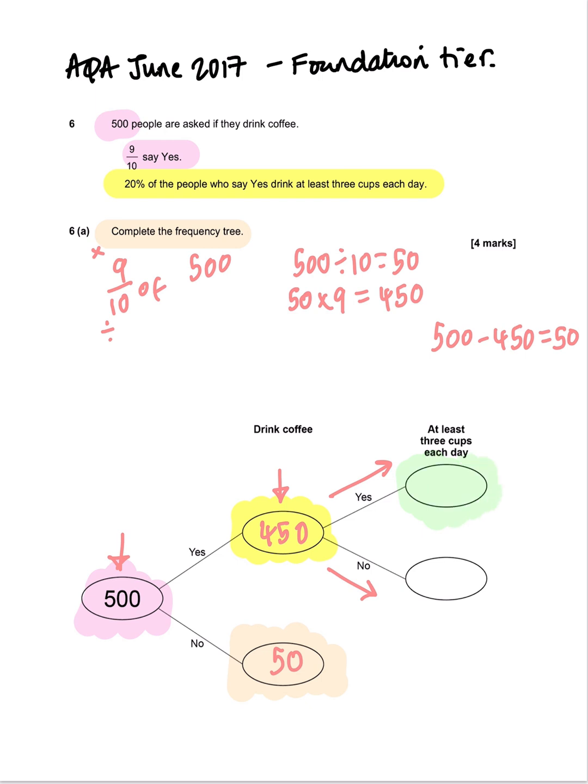That is 20% of our 450 people. So we want 20% of 450. Notice I'm writing all of my working down here, it's really important, just in case you write the wrong thing down. So 20% of 450, well 10% we divide by 10, so 450 divided by 10 is 45. 20% is double that, so 45 times 2 equals 90. So 90 of those 450 drink at least 3 cups a day.